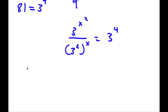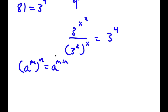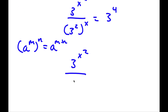Now if I have something in the form a to the power of m to the power of n, this is equal to a to the power of m times n. So 3 squared to the power of x equals 3 to the power of 2 times x, which is 3 to the power of 2x. And this is equal to 3 to the power of 4.